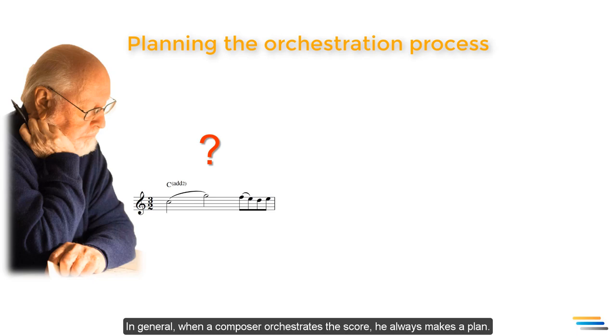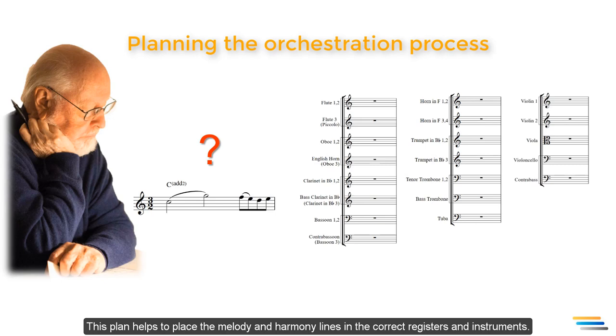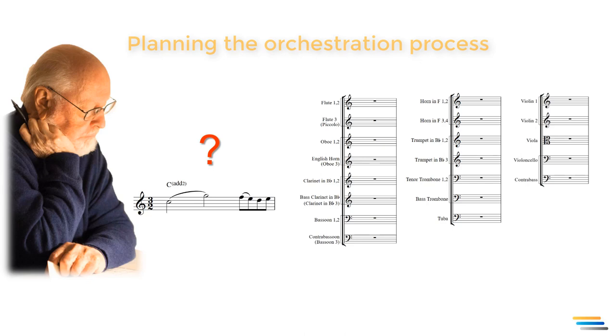In general, when a composer orchestrates the score, he always makes a plan. This plan helps to place the melody and the harmony lines in the correct registers and instruments. The important point is to achieve an effective timbre in the orchestra.